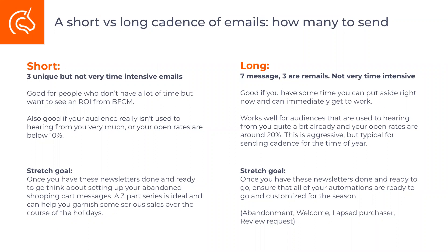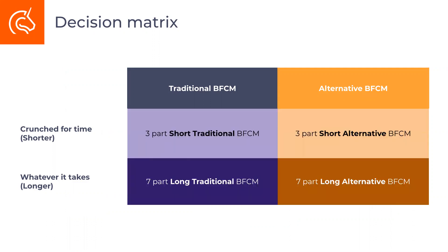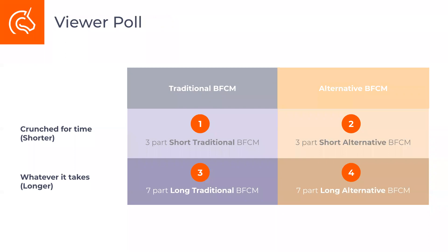So a basic decision matrix: are you going the traditional or alternative route, and are you a little more crunched for time going shorter, or whatever it takes going longer? That's going to be your approach and timing — your overall strategy. You should find yourself in one of these quadrants: one is three-part short traditional, two is short alternative, three is long traditional, or four is long alternative. I'd really like to know which one you're leaning towards because we're about to walk through all of them.